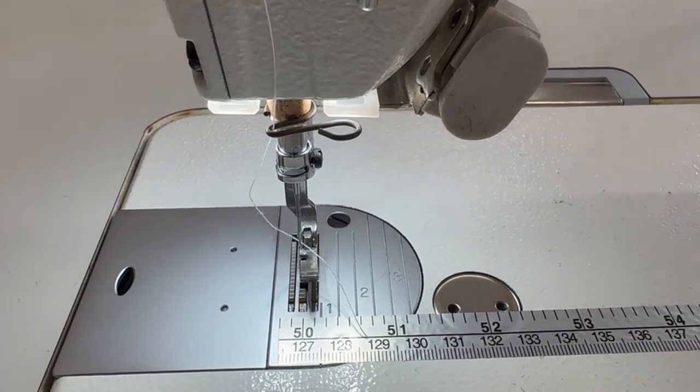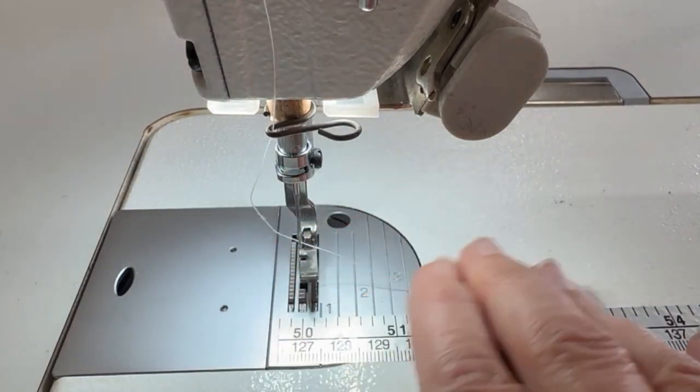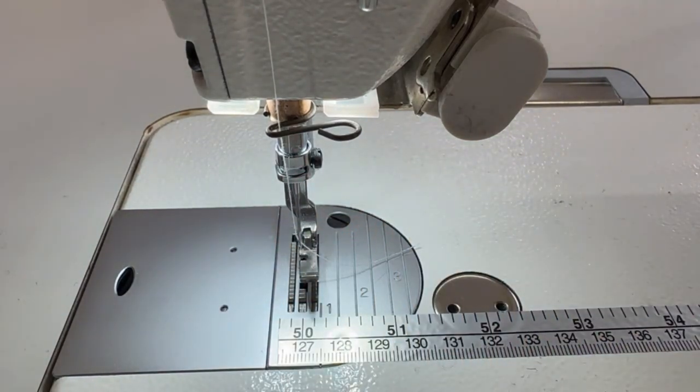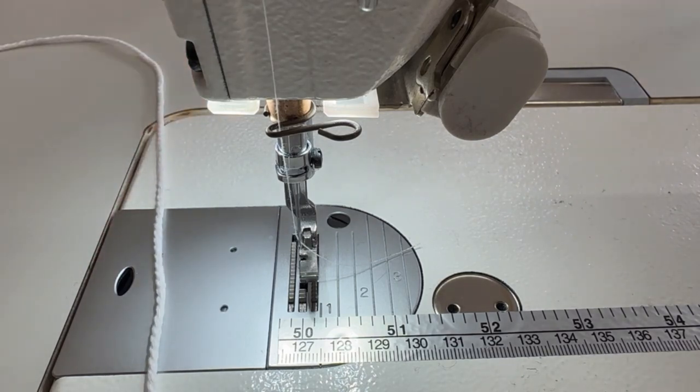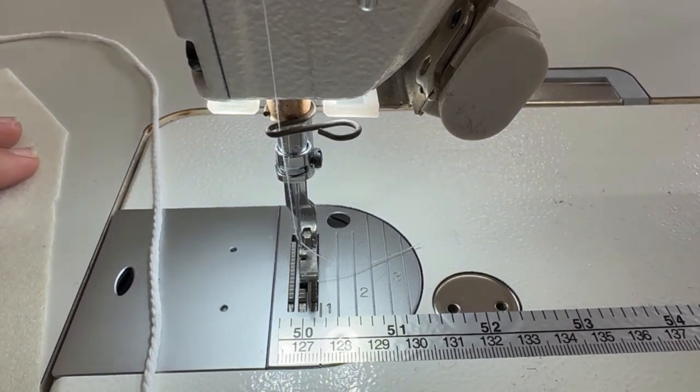Once you've done that and you've got your needle threaded, you're good to go. Then you take your piping cord. The width I'm using is number one width, and I'm using a piece of wool to actually encase my piping in.